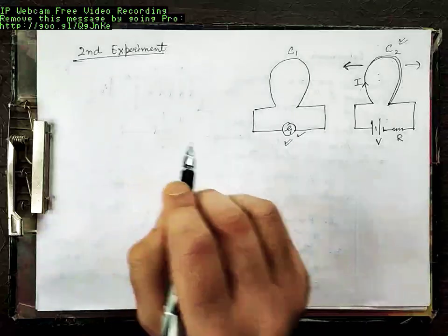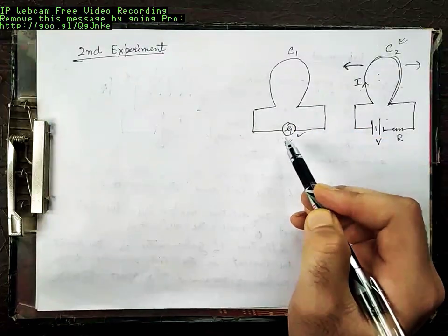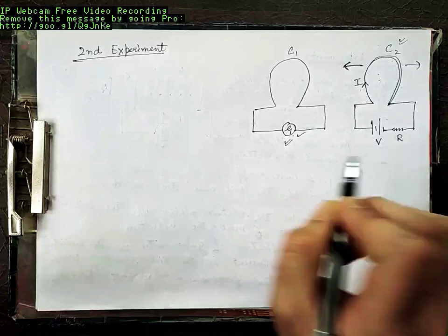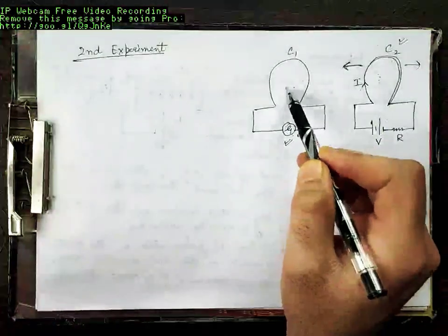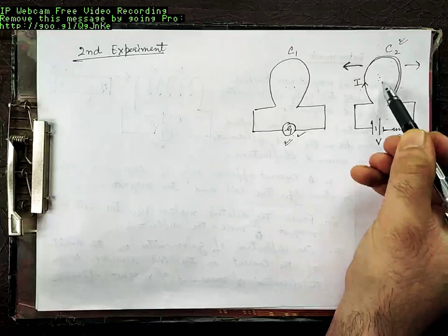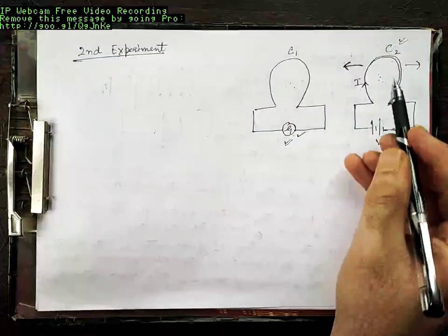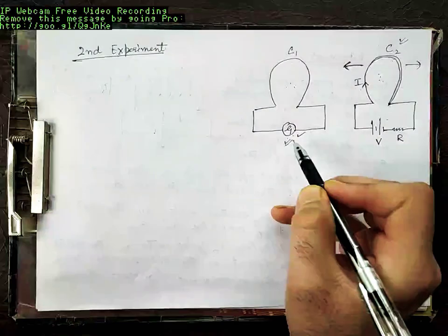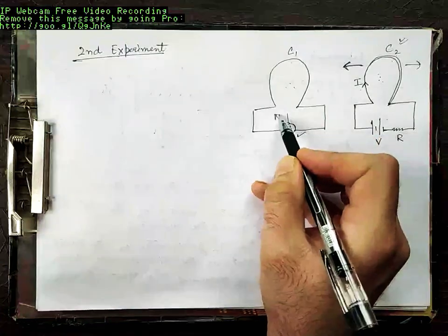Isn't this similar to the previous case? In the previous experiment, whenever a magnet was pushed towards the coil, the galvanometer showed deflection; whenever it was pulled away, the galvanometer showed deflection in the opposite direction. The only difference is that in this experiment you are using two coils — one carrying current — instead of a bar magnet. The current-carrying coil C2 behaves as a magnet, so pushing or pulling it produces the same effect.